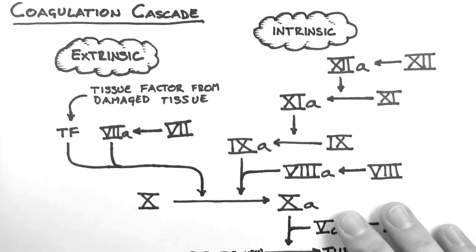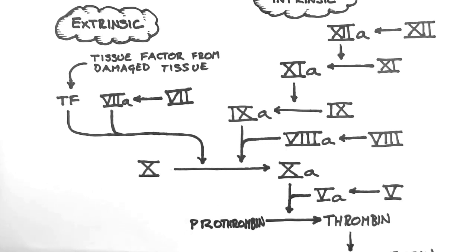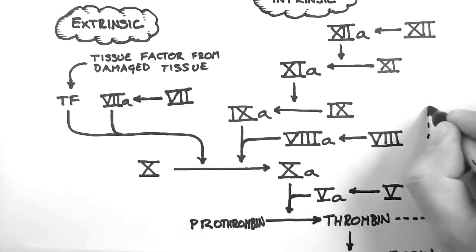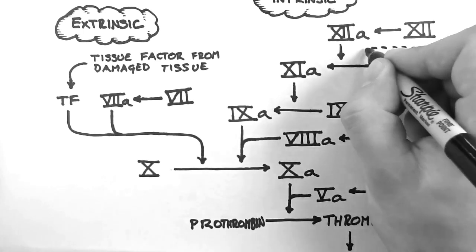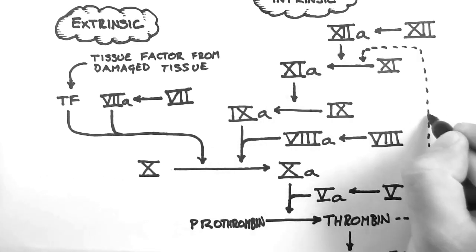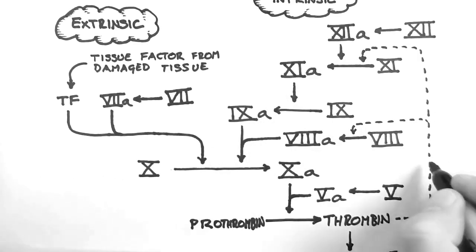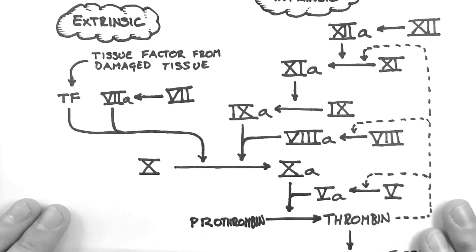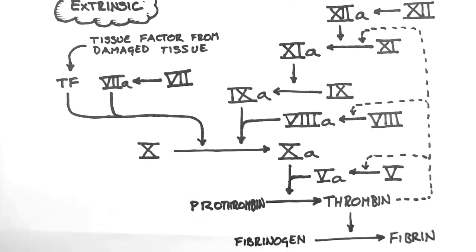One last thing we need to consider is the positive feedback effect thrombin has on the cascade. Thrombin has a role in accelerating the production of factor 11a, factor 8a, and factor 5a. In this way the cascade is amplified to produce the necessary fibrin in a short amount of time.